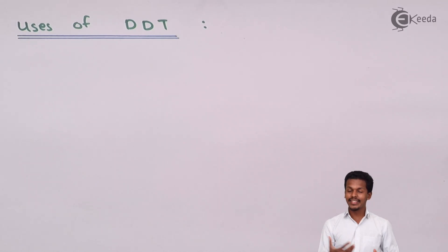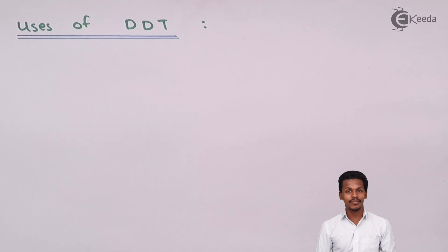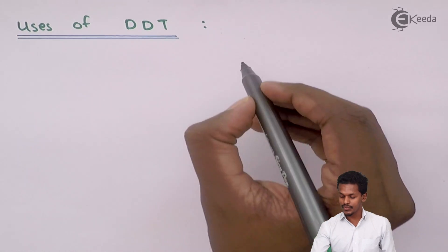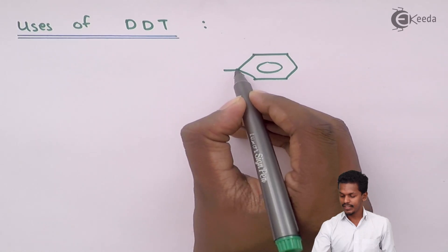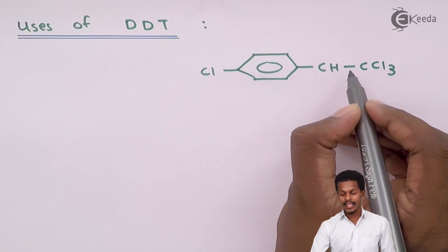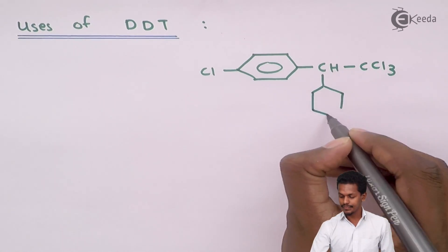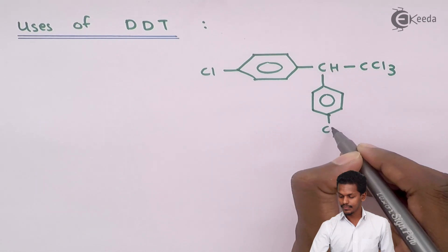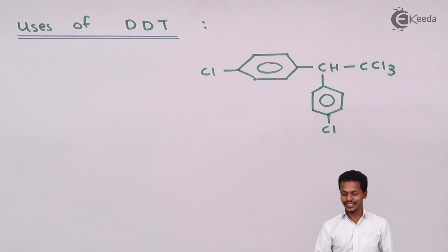Now let us discuss DDT, which is an aryl halide. DDT stands for Dichloro-Diphenyl-Trichloroethane. The structure consists of an ethane backbone with a trichloro group on one side, and two phenyl groups attached — one on each side. So the name reflects: dichloro, diphenyl, trichloroethane.